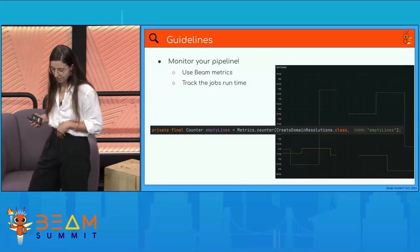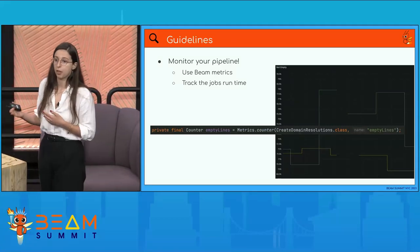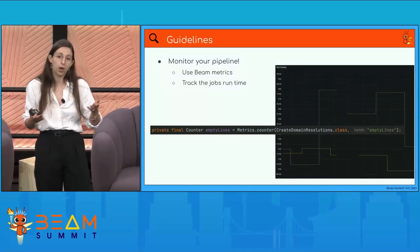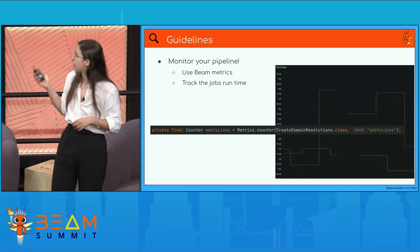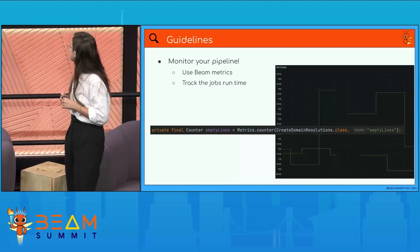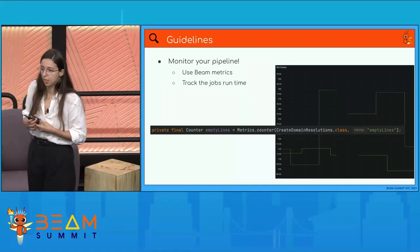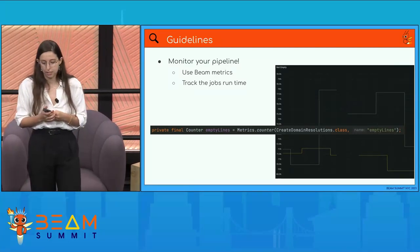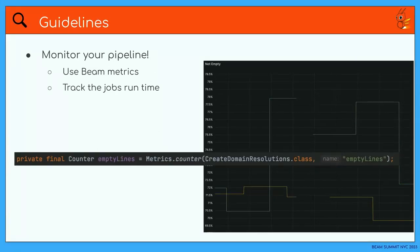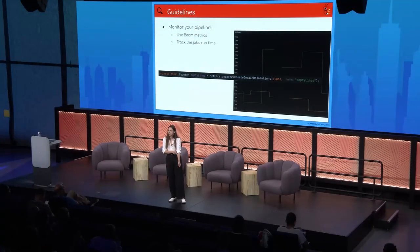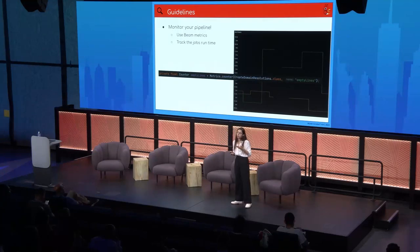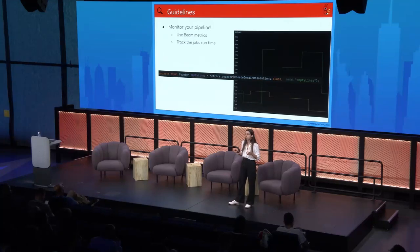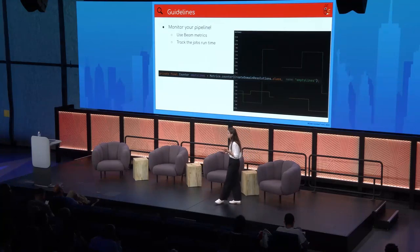Monitoring: Beam has a native utility to use metrics, and we use it to track our data quality and the size of the data we're processing. For data quality, we want to count things like empty lines — if you've developed a data pipeline, you know data quality is an issue, and we use Beam metrics to measure it. You also want to measure your SLAs, which depends on your monitoring infrastructure. The main things to track are data quality, data size, and runtime.